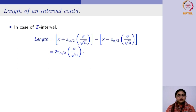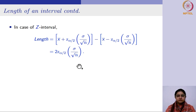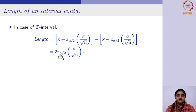Based on this, if you consider the z-interval, the length of the z-interval would be: U is x-bar plus z_{α/2} · σ/√n, minus the lower quantity. The sample mean cancels out from those two terms and you are left with twice z_{α/2} · σ/√n. So the length of the z-interval depends upon three factors.